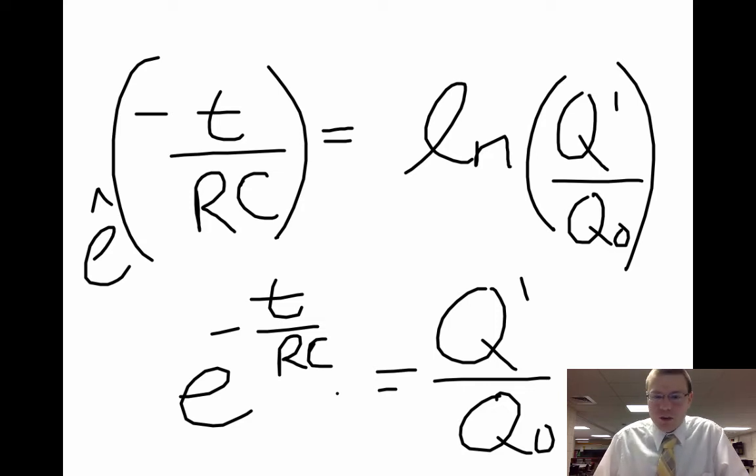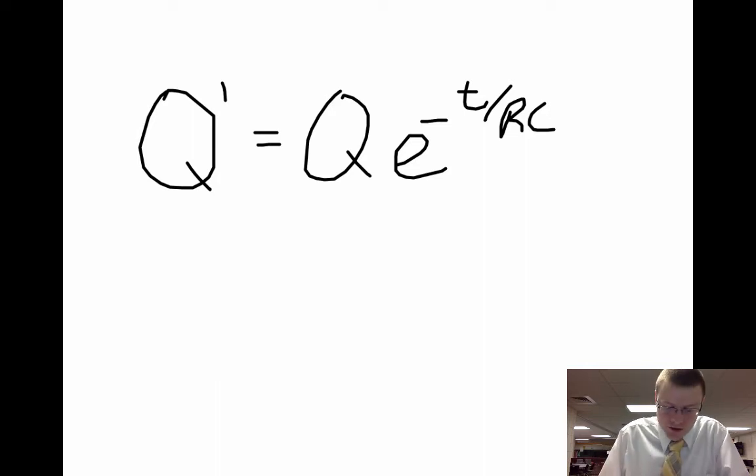If I want to solve for Q, one more step, and there you go. If I want to solve for the charge at any moment in time, I need to know the original charge on the capacitor, and I'm going to multiply that by e to the minus T over RC, T being the time after the switch is closed.